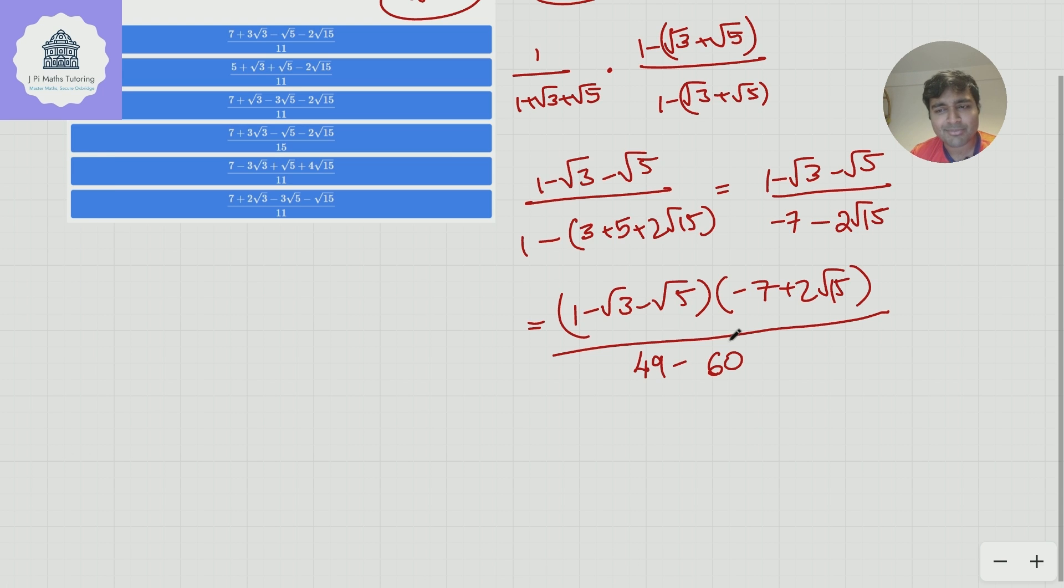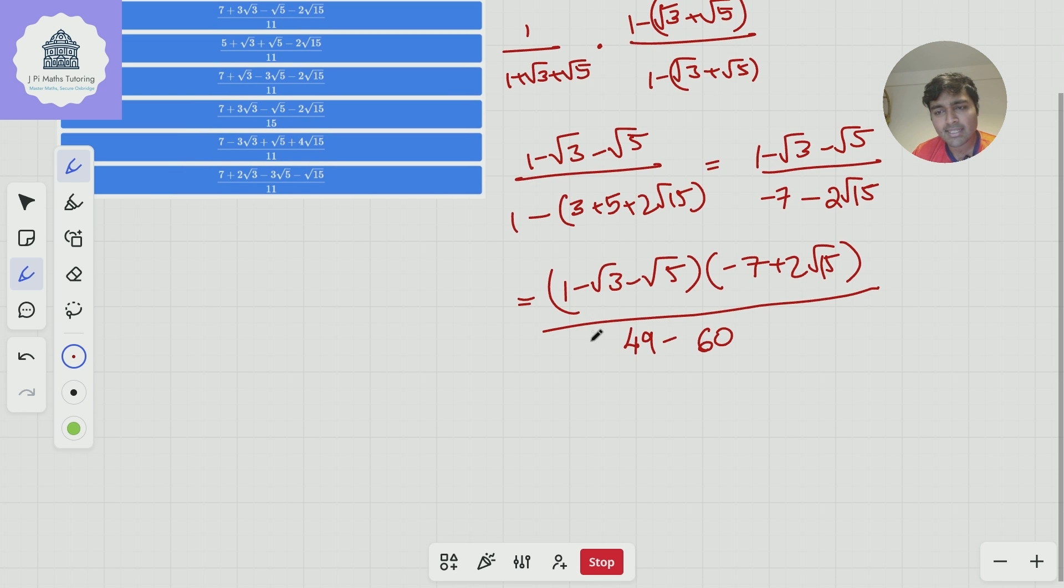Now here's the trick for simplifying the numerators. You could just expand this but I'm going to be smart about how I do this. I know that when I multiply these two brackets together I'm going to get a constant term, a root 3 term, a root 5 term, and a root 15 term, and so all I need to do is really consider the coefficients of those. Now let's start with the integers here. 1 times minus 7 that's nice and easy, that's minus 7.